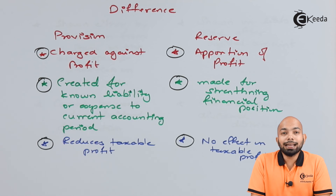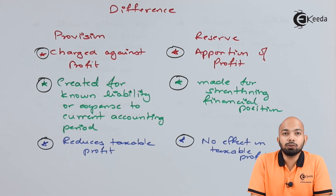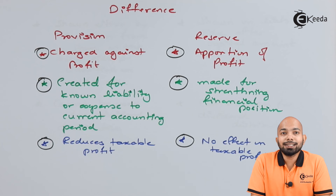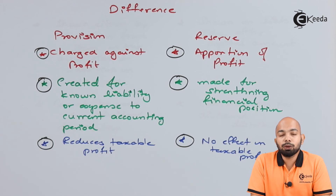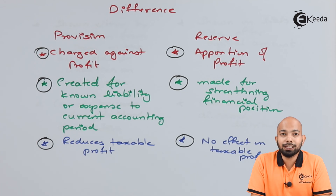Provision reduces or has a notable effect on the taxation of the company — the taxable profit goes down. However, when it comes to reserves, there is no effect on taxable profit when reserves are segregated. Reserves have no effect on taxable profit, whereas provision does. If excessive provision is shown, that means profit goes down, which could lead to tax evasion concerns — this might attract the income tax department asking for clarification on how these provisions have been created.